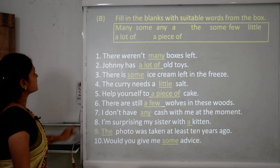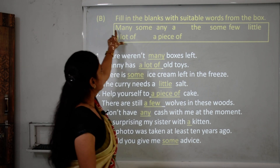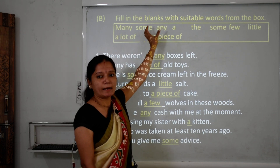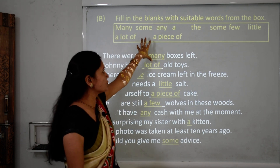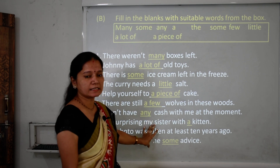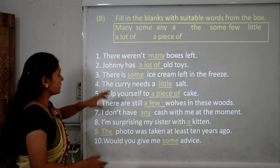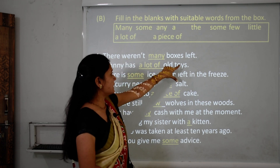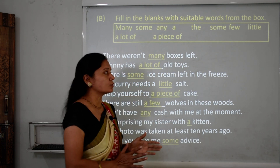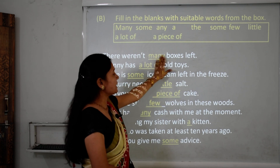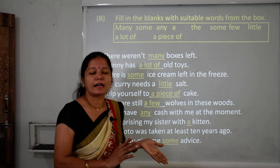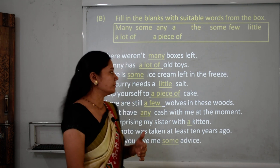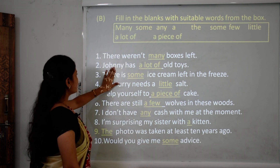Now let's move to Exercise B: fill in the blanks with suitable words from the box. Sentence 1: 'There weren't many boxes left.' Boxes is countable, so we write 'many.' As mentioned, 'many' is used with countable nouns and 'much' with uncountable nouns.